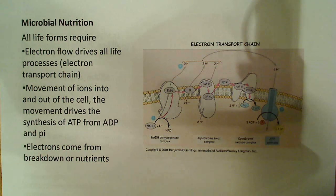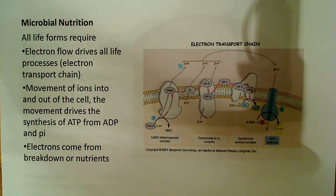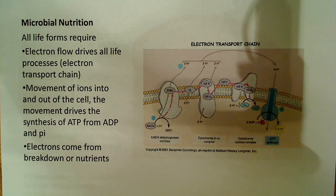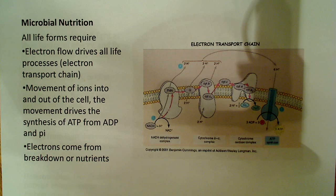This same machinery is also found in the cell membrane of bacteria. So it's not found in a separate organelle — it's actually in the plasma membrane itself — but it still serves the same purpose. It sets up a proton gradient, and that proton gradient is then used to drive the synthesis of ATP from ADP and inorganic phosphate.